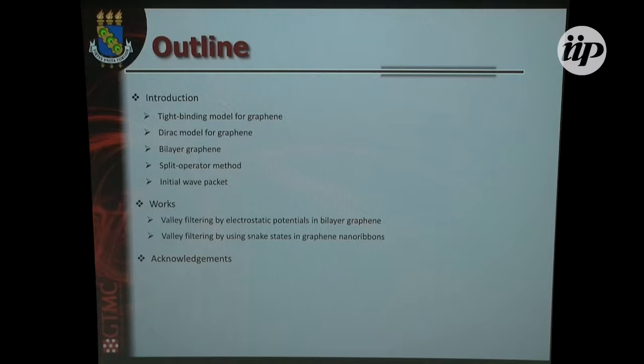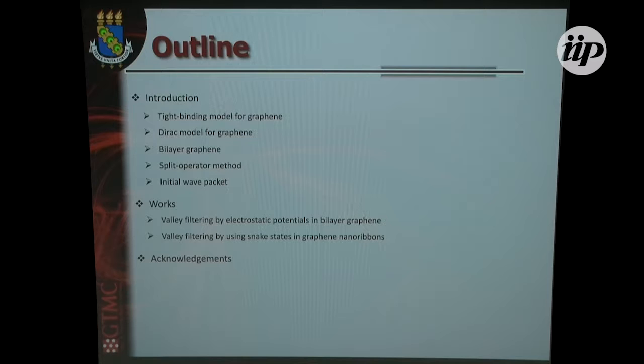I didn't mention it yet, but in both proposals, what we use is a description of the electron as a Gaussian wave packet. This Gaussian wave packet is propagated in time by solving the time-dependent Schrödinger equation. In contrast to the previous work — as Alexandre showed last week using the Landauer-Büttiker formalism — this approach is very simple: just solve the time-dependent Schrödinger equation and use a Gaussian wave packet to describe electrons.